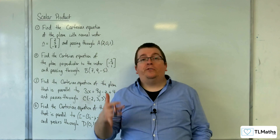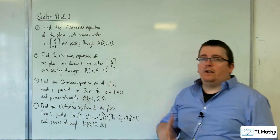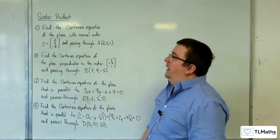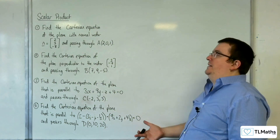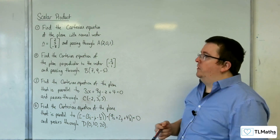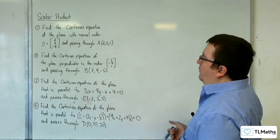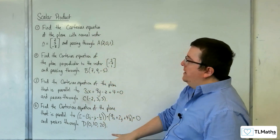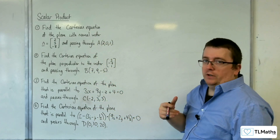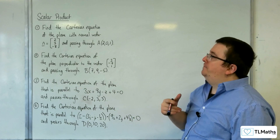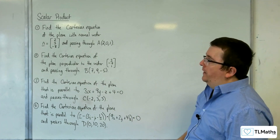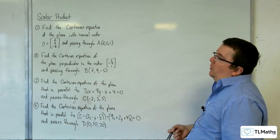In this video we're going to be focusing on finding the Cartesian equation of a plane given a normal vector and given a point that it passes through. What I've tried to do is vary the wording of the question, but all of these are really asking the same thing. So let's look at number 1.